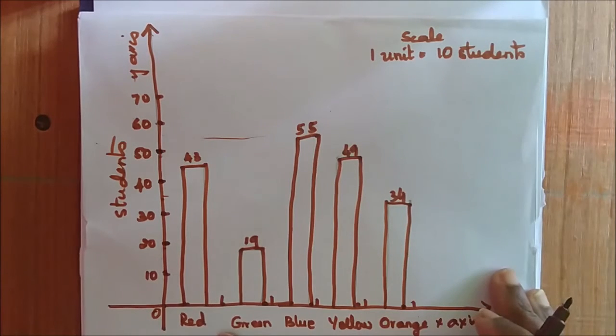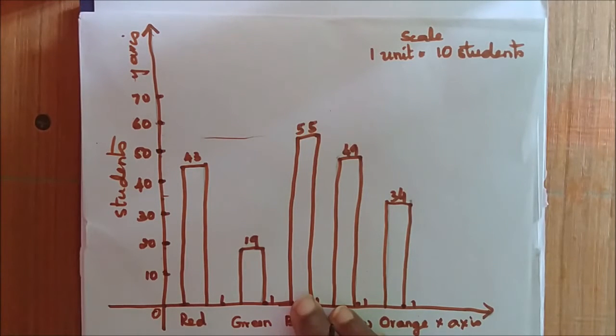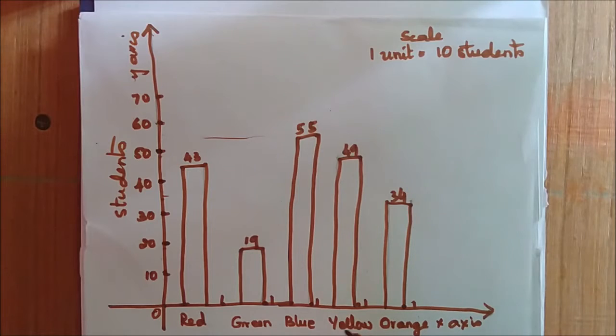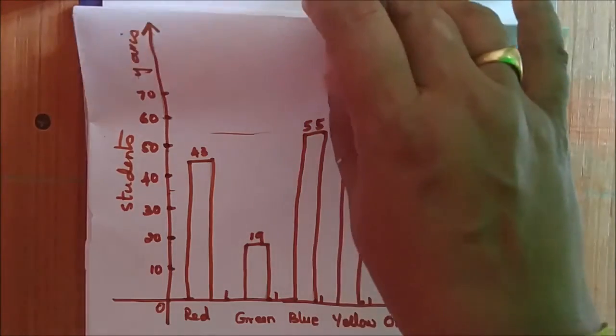From this graph, what is the inference you get? The color which is liked by most is the blue color, and the color which is liked the least is the green color. And how many colors are there? There are red, green, blue, yellow, orange, five colors. So this is the inference we get from this bar graph.